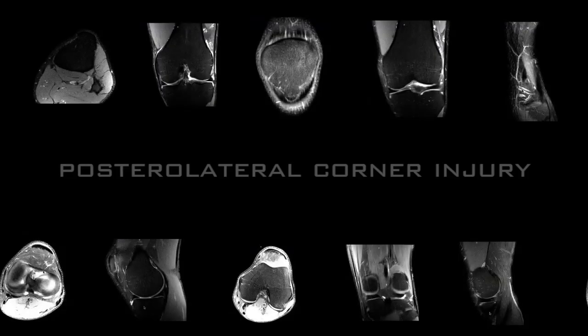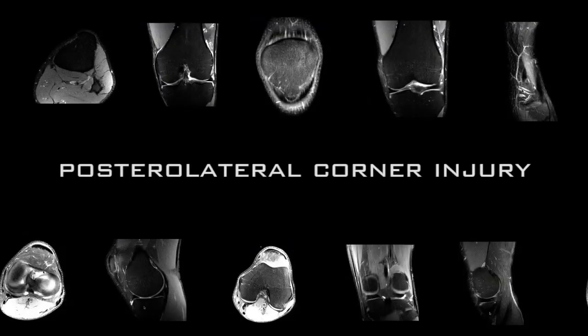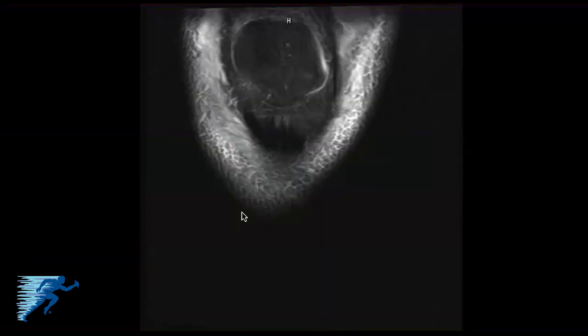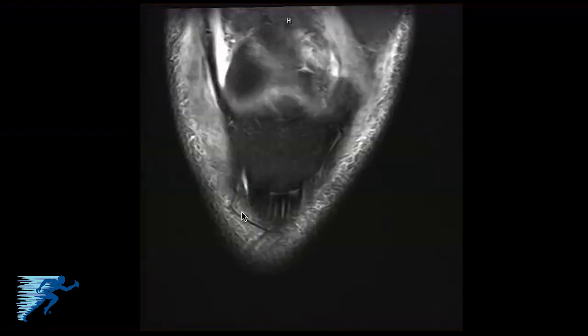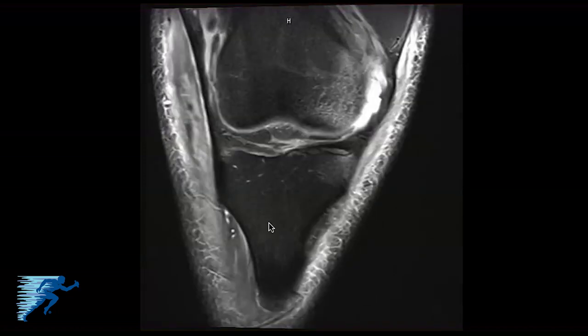I'll go through the different MRI sequences we'd look for with these injury patterns and also some of the secondary signs we'd see with a posterolateral corner injury. Starting with the fat saturation images in a coronal view of a right knee, one of the first things we'll see is some edema in the bone on both the anterior aspect of the medial femoral condyle and the anterior aspect of the medial tibial plateau. This is a common secondary sign of a posterolateral corner injury.